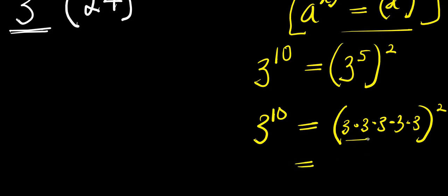3 times 3 is 9, times 3 is 27, times 3 is 81, times 3 is 243. So 3^5 equals 243, and we need 243 to the power of 2.